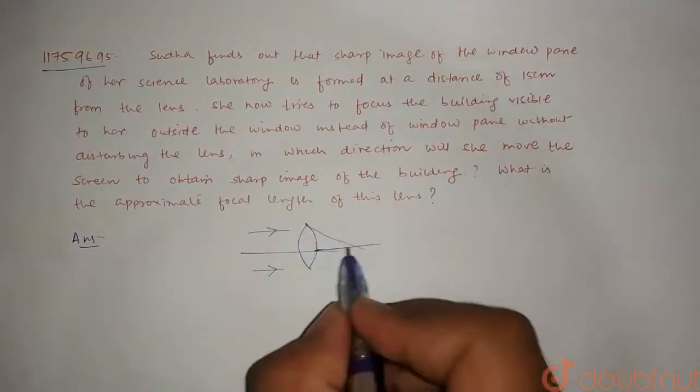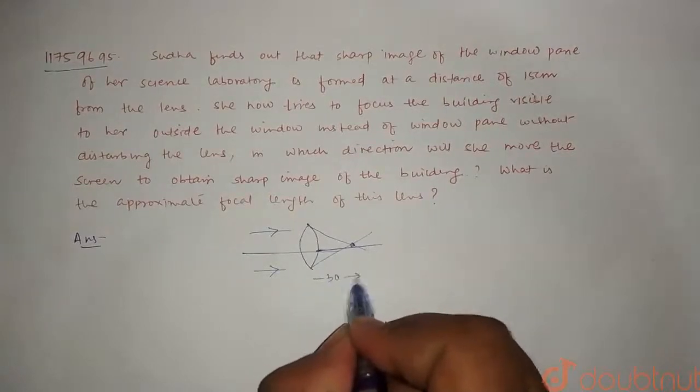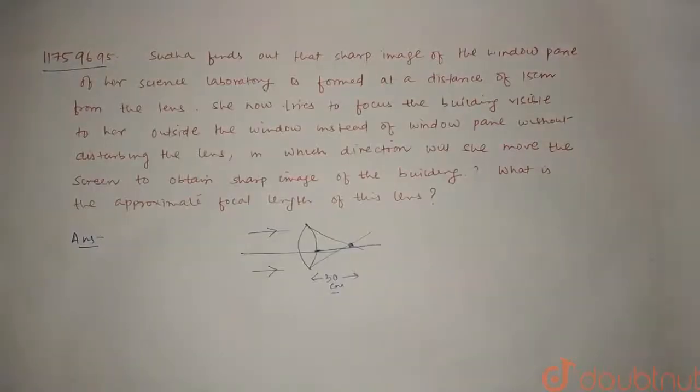This is the distance of 30 cm from this lens. So the question has asked that now we have to create an image of a building outside the window.